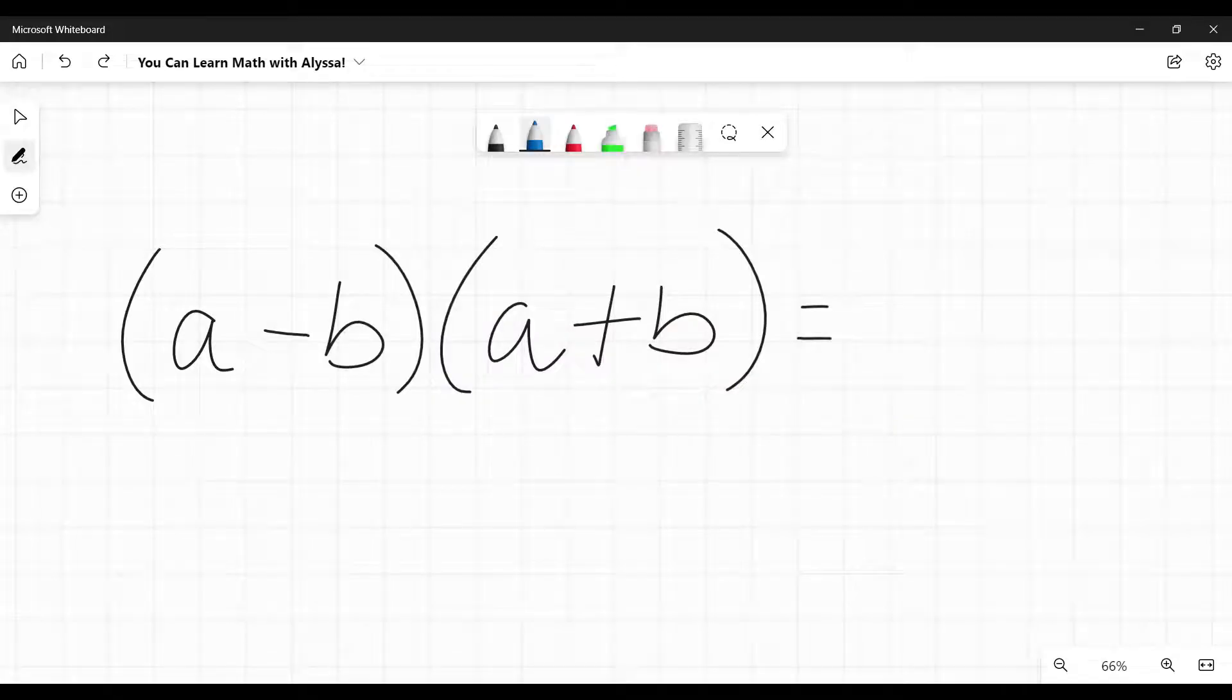The difference of squares is a rule that says if I have any two numbers or variables and I put them in this format where I have a minus b, then I multiply that by a plus b. After I distribute and combine like terms, I will always get a squared minus b squared.